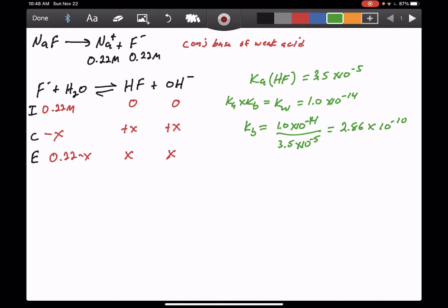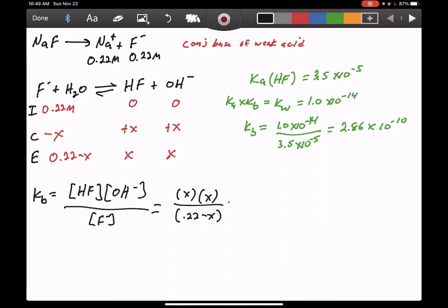What do we do with that Kb? We can write an equilibrium constant expression for our equilibrium reaction. Kb equals concentration of HF times concentration of OH minus over concentration of F minus. We have those concentrations in terms of a single unknown, so we have x for HF, x for OH minus over 0.22 minus x for F minus. This equals 2.86 times 10 to the minus 10.